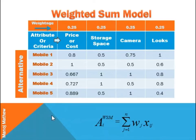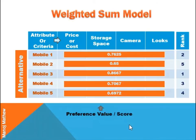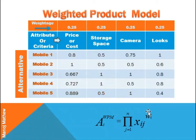Out of five available alternatives, in a previous video we looked at how to calculate the preference value using the weighted sum model and weighted product model. This is the formula for calculating the preference value using the weighted sum model. Ai is the preference value. This is the preference value and corresponding rank obtained using the weighted sum model.